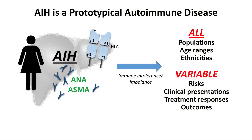This happens in all populations. We have age range and duration of disease, different ethnicities, and really all populations around the world. We know this disease is variable, and as I say often, all AIH is not the same. This may be related to clinical presentation — how do you present with this disease, what symptoms — and how you respond to therapy. It may even impact how you improve or get worse, hopefully not, with treatment.